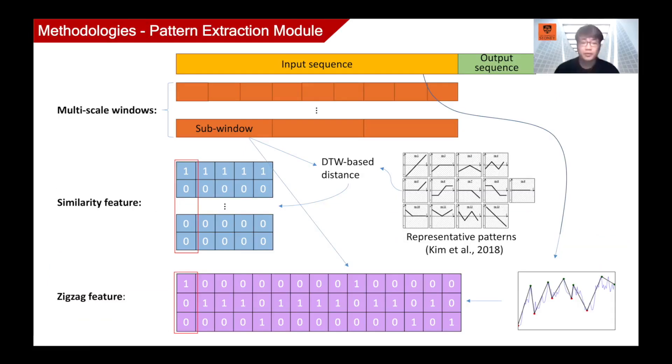Thank you, Yuanbo. This slide shows how we extract pattern feature from the data sequence. We use two kinds of features. The first one is a similarity feature. We defined 13 representative chart patterns based on Kim's paper. When extracting features, we first cut each input sequence into several sub-windows.